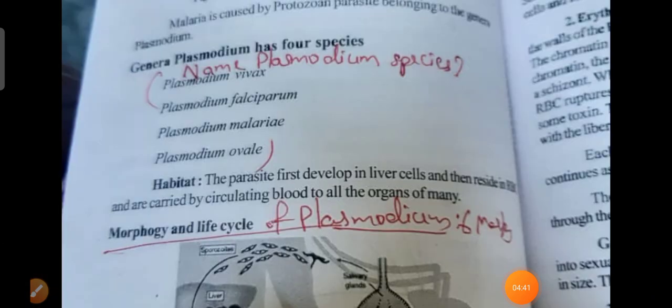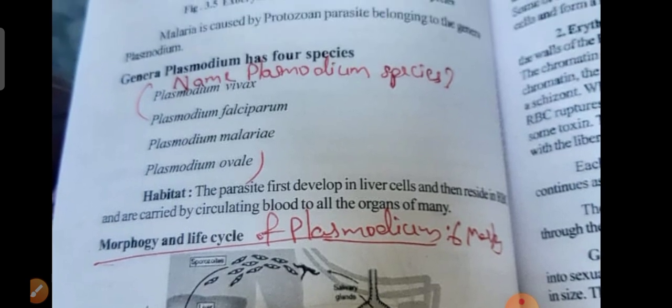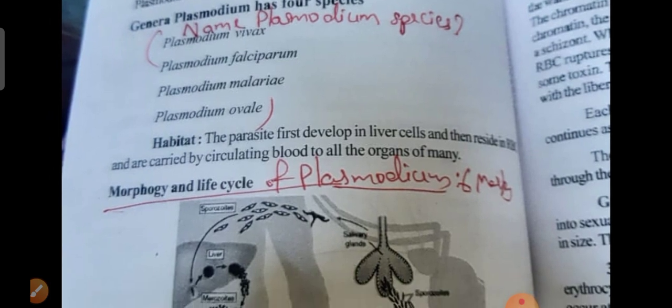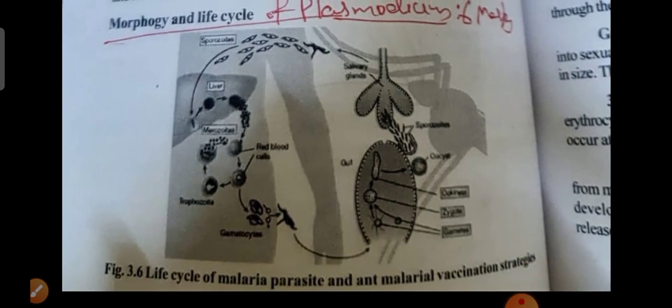Next, name the Plasmodium species — this is a two-mark question. List out the names of the Plasmodium species, and the morphology and life cycle of Plasmodium are six-mark questions. They may ask six-mark questions on this, so try to draw the diagram of the Plasmodium. Also study the Viven method and Strokes method.